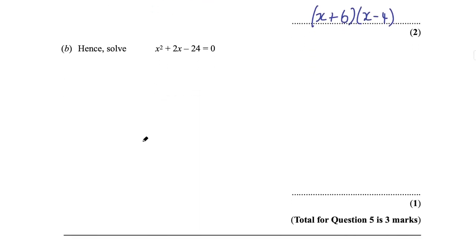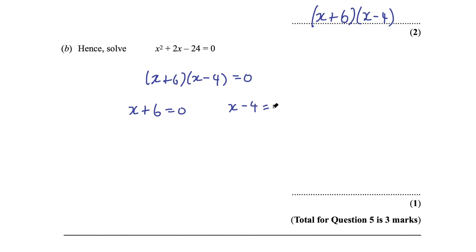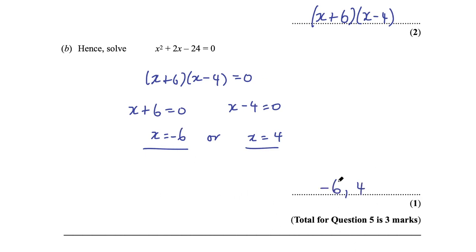Part B says hence solve x² + 2x − 24 = 0. Using the factorised form: (x + 6)(x − 4) = 0. Either x + 6 = 0, giving x = −6, or x − 4 = 0, giving x = 4. A quadratic gives two answers. Final answers: x = −6 and x = 4. That was question 5 for 3 marks.